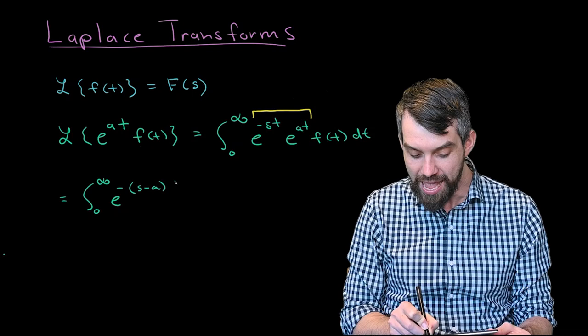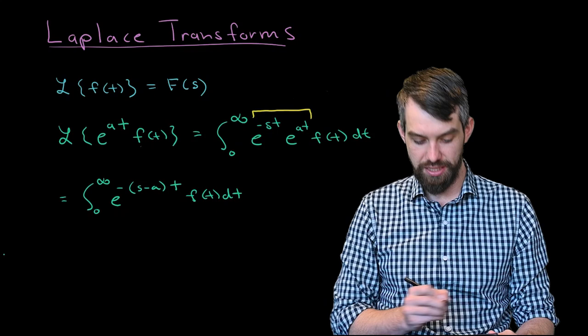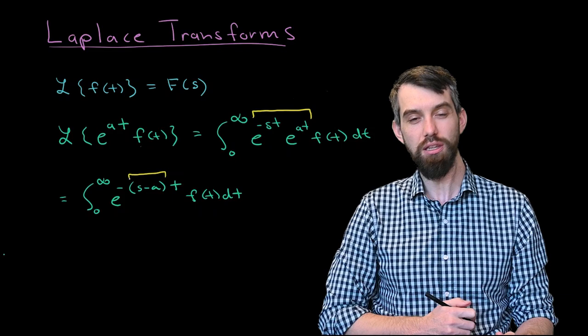I observe that I have two different exponentials, so I can put those together and say that this is the integral from 0 to infinity of e^(-(s-a)t) times f(t) dt. Note there are two minus signs in front of the a, which gives a positive in front of the a.